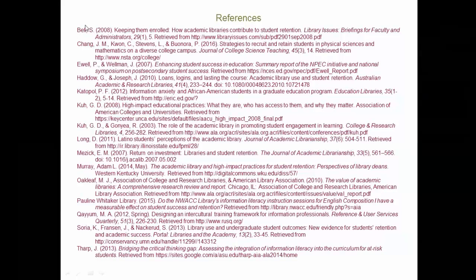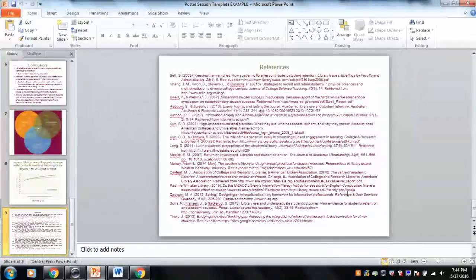Here's my references slide. I know it's a lot to take in. There's a lot of text here. But you can distinguish the citations from each other because I do use the hanging indents. So you can see Bell is an author of an article that I used. Chang, Kwon, Stevens, and Buenora are another. So each of these is a new article.